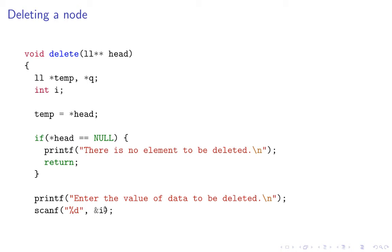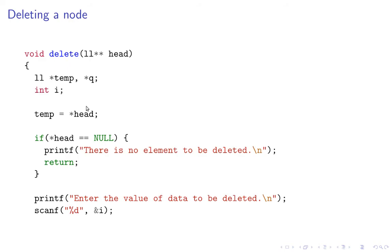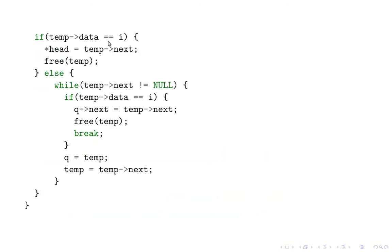Then we do a scanf for what value of data we want to delete. Note that temp data is equal to i — temp is nothing but the head pointer, so the data at head is equal to the given input. Then we point head to the next element, because temp is nothing but head, so we could have also written star head arrow next, and then we free temp.